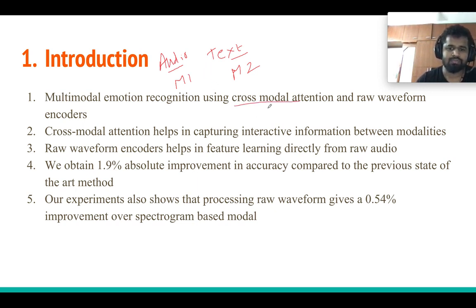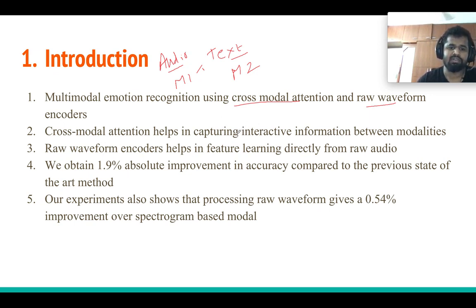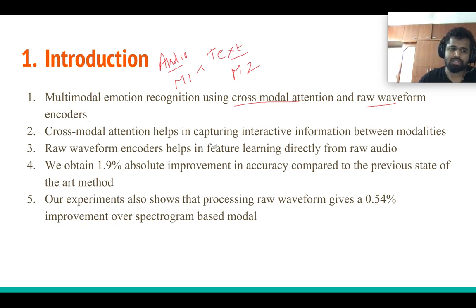We use something called cross-modal attention, which I'll explain in a coming slide, along with raw waveform encoders. The idea of cross-modal attention is to capture the interactive information between different modalities — in our case, audio and text — and to learn a representation that captures this interactive information so we can efficiently predict the emotion label of a particular audio.